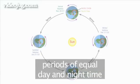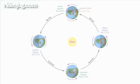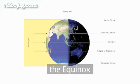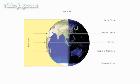So between these two dates, there must be a period when the Earth is equal right across the whole planet. These days are called the equinox and occur on March 21st and September 21st each year.